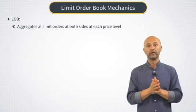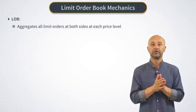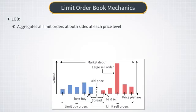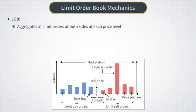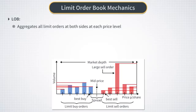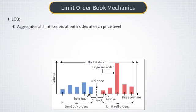Let's come back to the limit order book. A good way to visualize it is with diagrams like the one shown here. We have the buy side in blue on the left and the sell side in red on the right. The position of each bucket is a price level, like a cent for the U.S. market, and the height of each bucket is the total quantity. The rightmost blue bar is the best buy quote, called the bid price, and the leftmost red bar is the best sell quote, called the ask price.